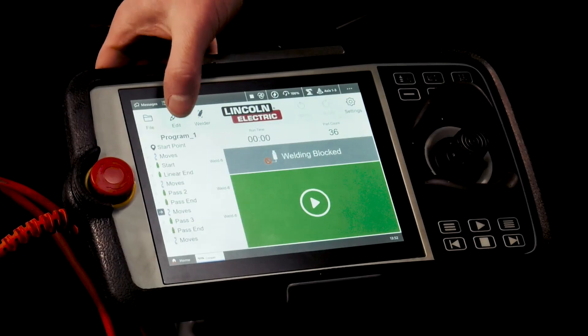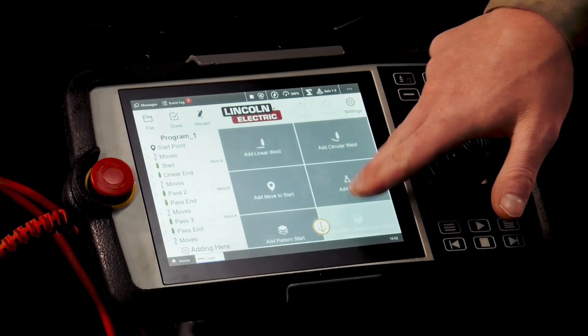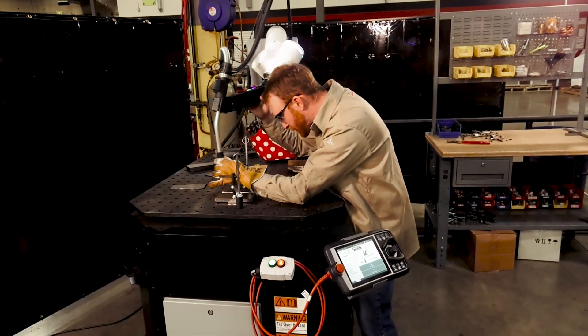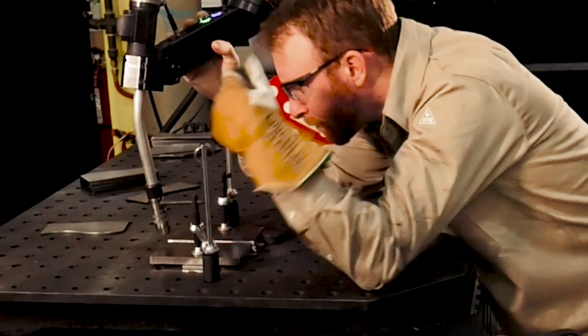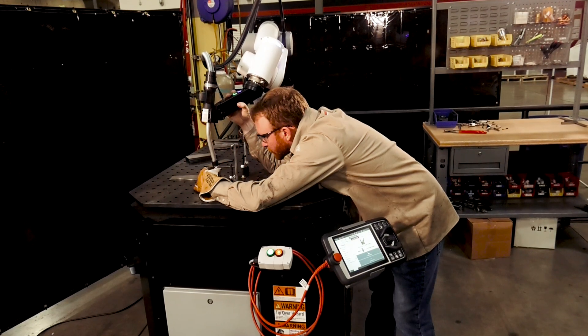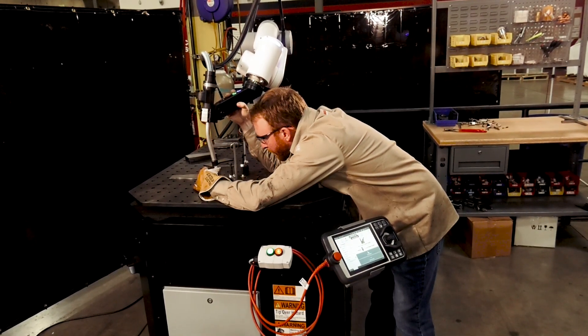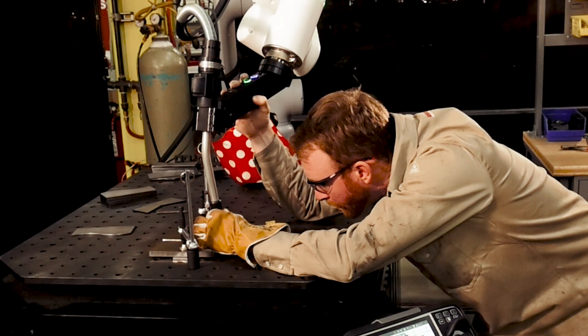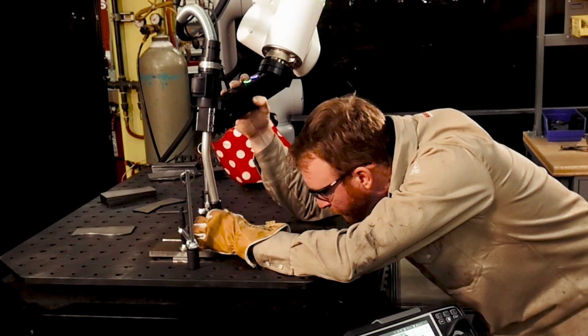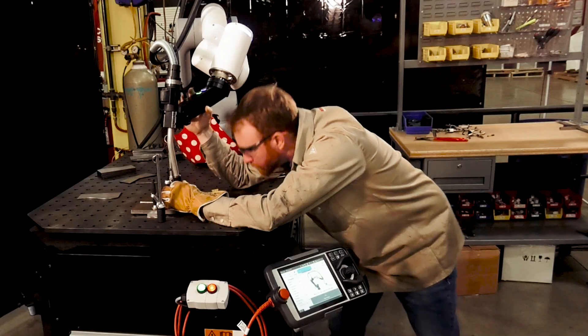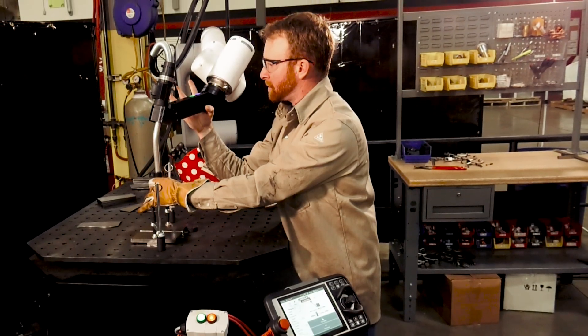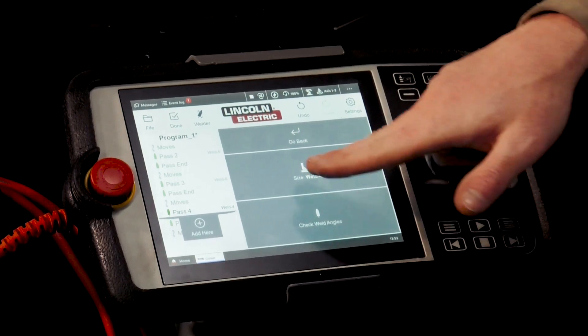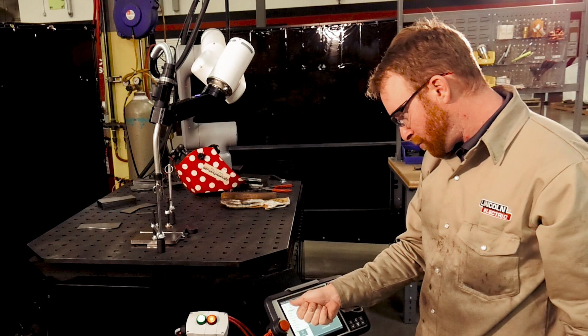And then we're just going to repeat that process for the third step. Go back to edit, add pass, press continue, bring the robot to that start position. Green button for start weld right there. And again, hold that green button for end of weld. Bring it up to where it's out of the way, press the blue button. And again, we're going to make sure our weld type is what we want. Press done.